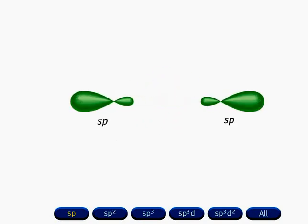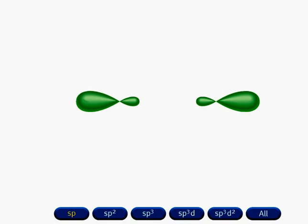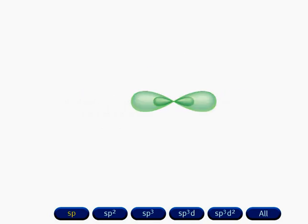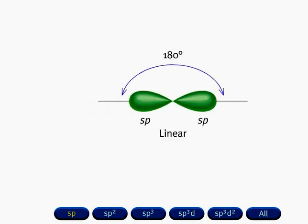Mixing an s orbital with one of the p orbitals generates two equivalent sp hybrid orbitals. Note that the number of hybrid orbitals is equal to the number of atomic orbitals that are hybridized. The set of two sp hybrid orbitals has a linear arrangement, and the angle between the orbitals is 180 degrees.